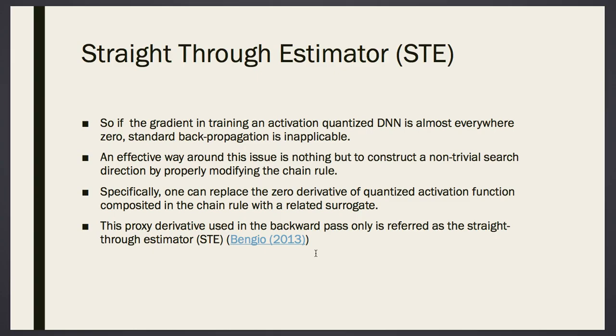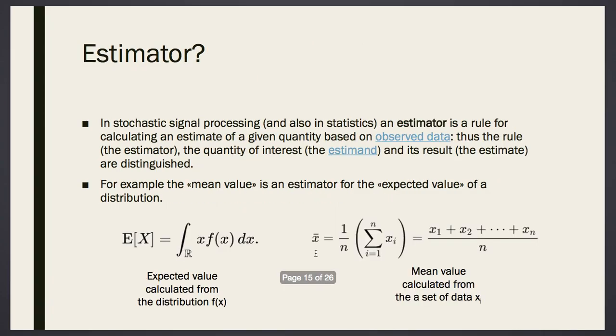It is used in the backward pass only. So, instead of signum, we use in backward pass this derivative, but in forward pass, we use signum as usual. So, it is referred to as the straight-through estimator. What is an estimator? We just asked the question in the previous video.